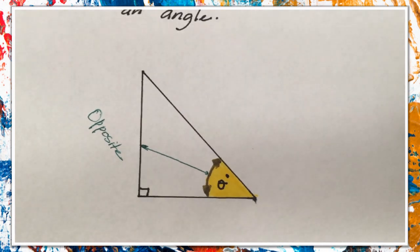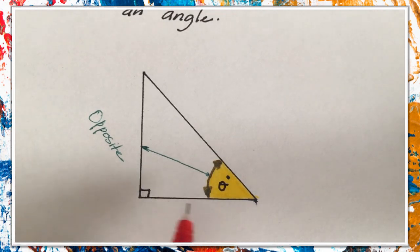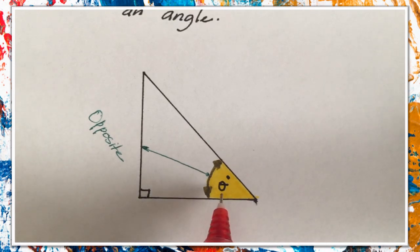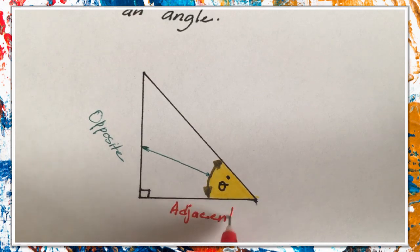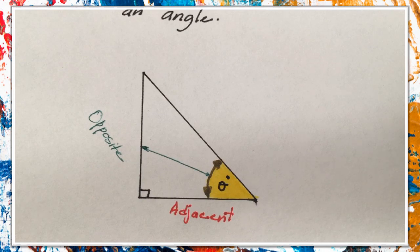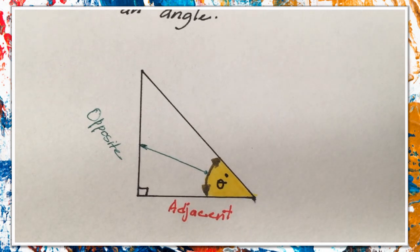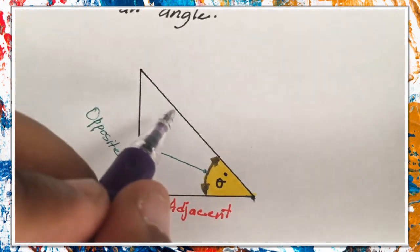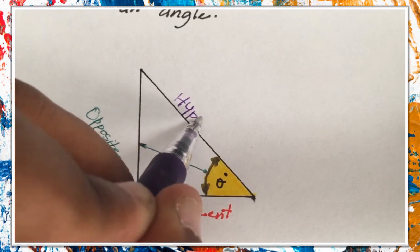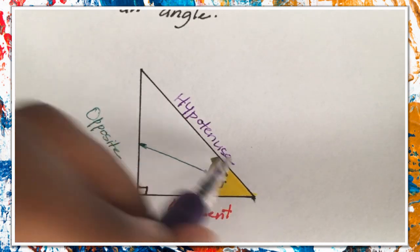Now we introduce the adjacent. The adjacent is the line that forms the angle with the hypotenuse — or you could say the line that is on the angle. Notice that the angle is here and the line on it is this one, so this one is what we call the adjacent. And everyone knows the hypotenuse — the hypotenuse is the longest line of the right angle triangle and it is opposite to the 90-degree angle. So this is the hypotenuse.